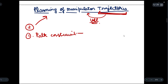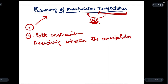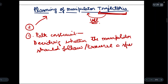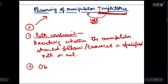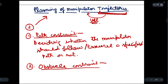In the path constraint, we have to decide whether the manipulator or the robot arm should follow or traverse a specified path or not. This is the path constraint — we have to decide whether the manipulator should follow or traverse a specified path or not.